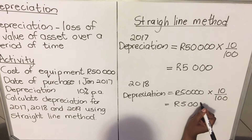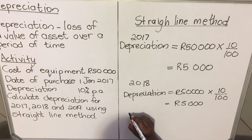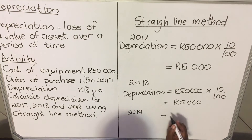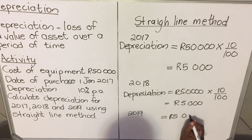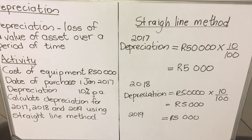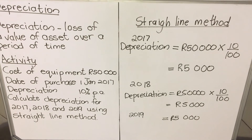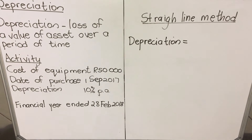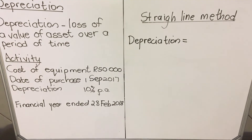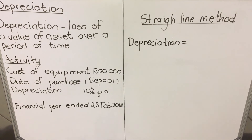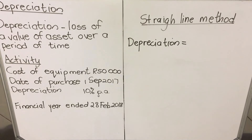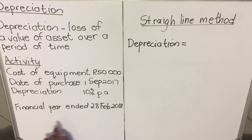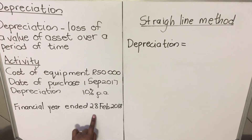The depreciation for 2019 will also be five thousand. Now let's look at an example where the asset doesn't cover the whole year. In this new activity, the cost of equipment is still fifty thousand, but the date of purchase is now 1 September 2017. The depreciation is still 10 percent per annum, but the financial year ends 28 February 2018.